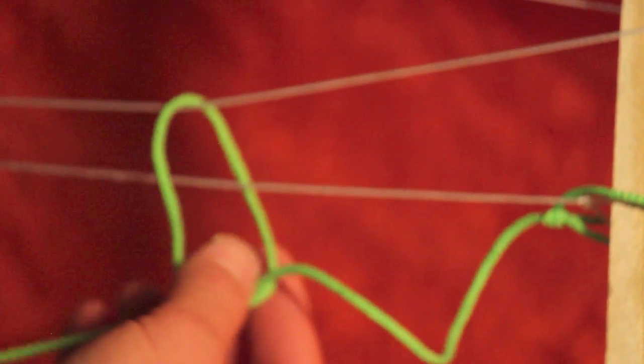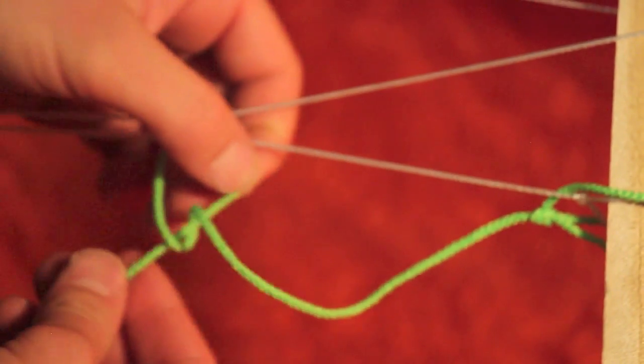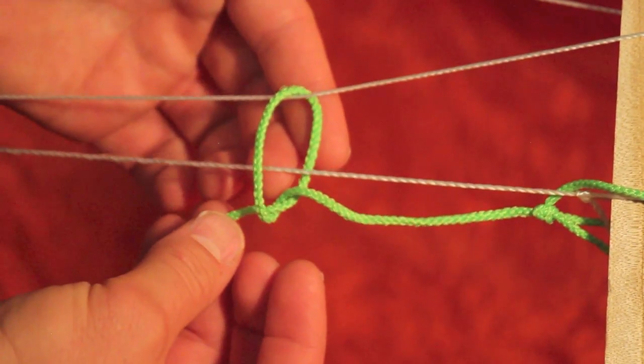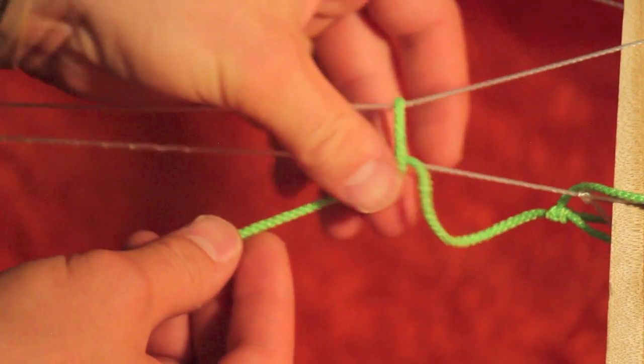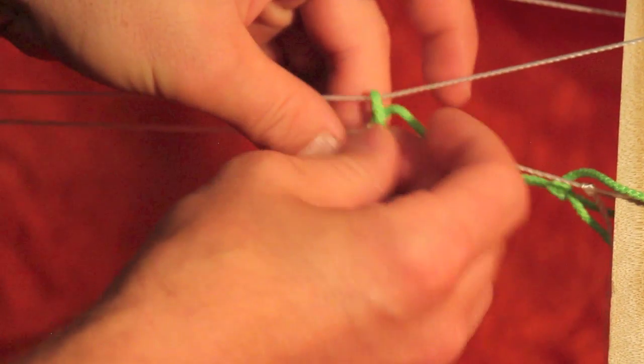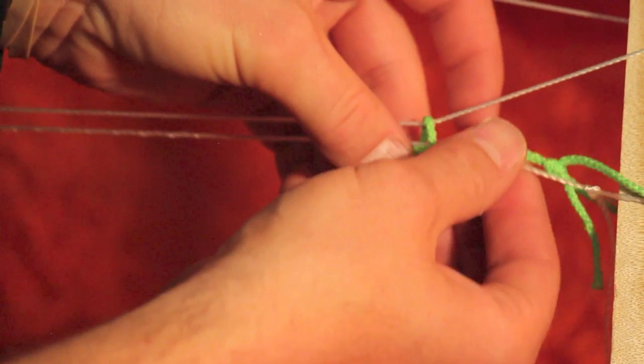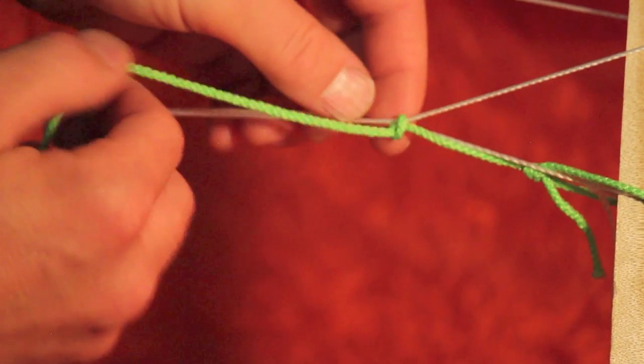You just want to do a simple overhand knot. You can see that's what I've got right here. It's just an overhand knot. I'm going to dress that up to be close to the edge of my loom. That's going to create the first set of knots at the very edge. Tighten it up.